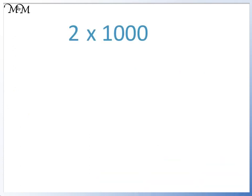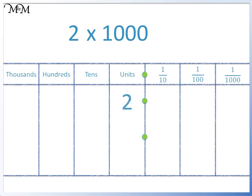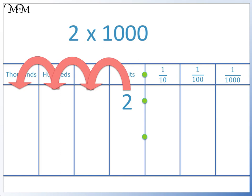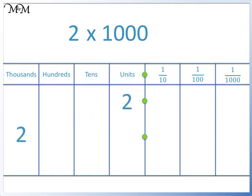For example, 2 times 1000. We can begin by putting 2 on a place value grid. We are multiplying by 1000, so we move the 2 three places to the left. We have moved the 2 to the 1000s column. Because there are spaces in the 100s, 10s and units columns, we write a 0 in each column. 2 times 1000 equals 2000.